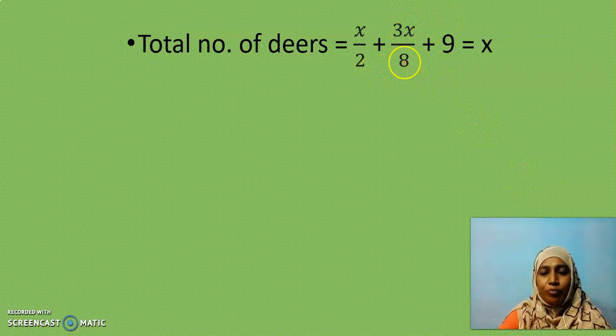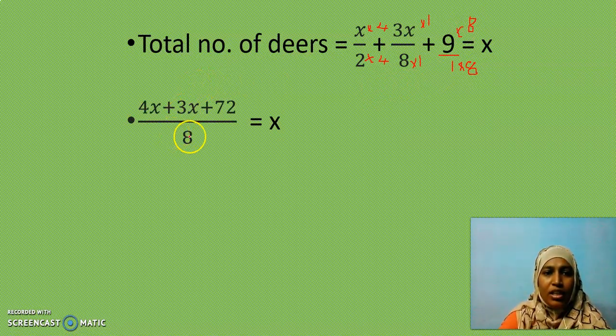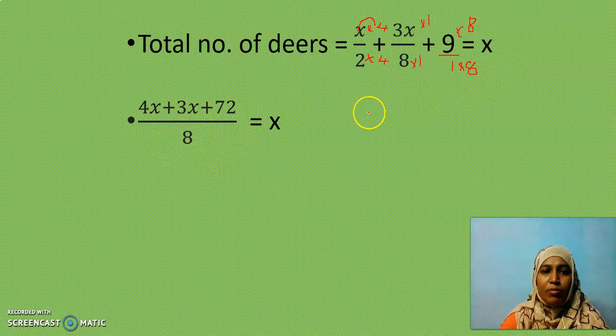Now, as usual, what is the thing we will do? We will find LCM for these three things. Only then we can club all the numerators together. So this 8 is a multiple of 2. So the LCM is going to be 8. What should be multiplied by 2 to get 8? Yes, 4. So I am going to multiply this x with 4. So I will get 4x. Here already it is 8. So if I multiply by 1, I will get 8. So I will multiply this 3x also along with 1. Here, I should multiply by 8 to get the LCM 8. So here also I multiply by 8. So the LCM is 8. And if I multiply this 4, I get 4x. Then, 3x as it is. Then, 9 eights of 72. Divided by LCM 8. Which is equal to x.